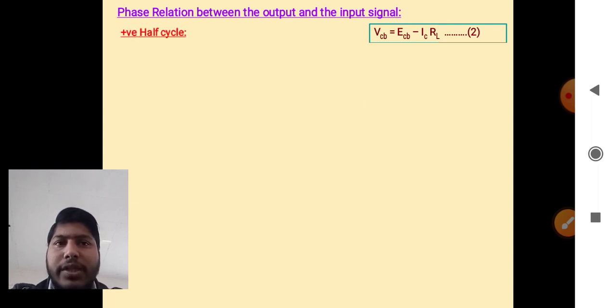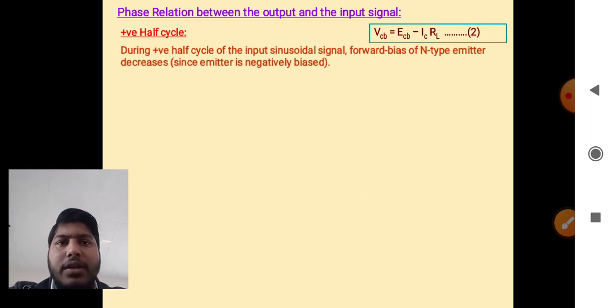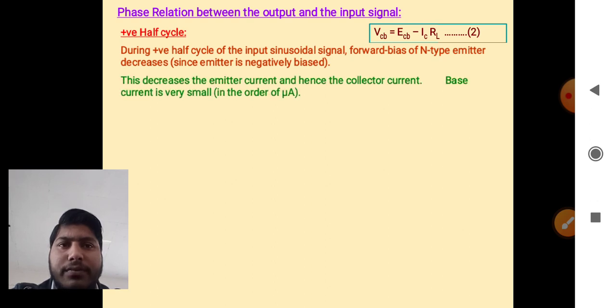We will discuss positive half cycle. During positive half cycle of input sinusoidal signal, forward bias of n-type emitter decreases. This decreases the emitter current and hence the collector current. Base current is very small.